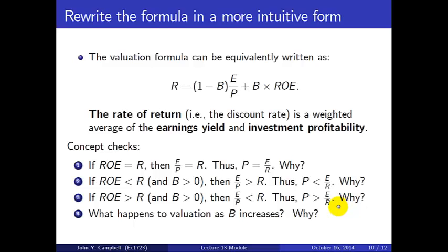This is getting a little ahead, but when we talk about long-term bonds — infinitely lived bonds that simply pay E forever — those bonds would be worth the amount they pay divided by their discount rate. So P equals E over R refers to a situation where the firm is valued equivalently to one which just pays out E forever.